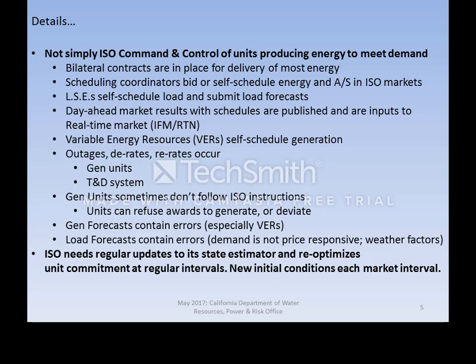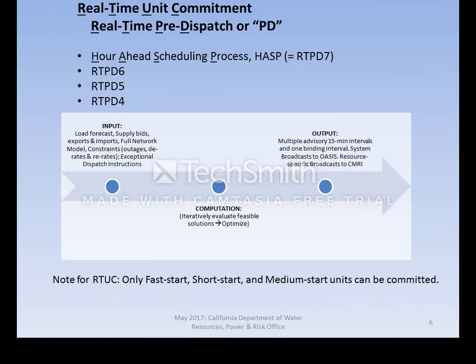Advisory instructions make a recommendation concerning production schedule but lack any financial implication. The available mix of generation units and the configuration of the electric network varies over time. Consequently, the inputs to the ISO state estimator vary over time and the ISO must re-optimize unit commitment for each 15-minute interval. The processes or applications of the real-time market include: the Hour Ahead Scheduling Process (HASP), Real-Time Unit Commitment (RTUC), Short-Term Unit Commitment (STUC), Real-Time Economic Dispatch (RTED), Real-Time Manual Dispatch, and Real-Time Contingency Dispatch.